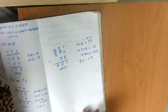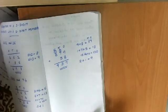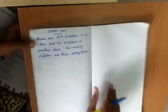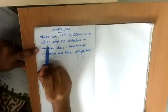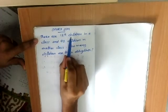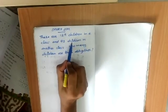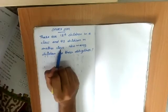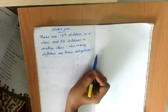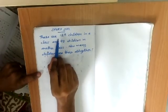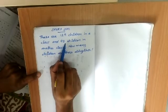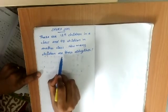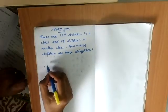So like this we can add a three-digit number and a two-digit number. Now we can see a story problem of this type. There are 129 children in one class and 93 children in another class. How many children are there altogether?